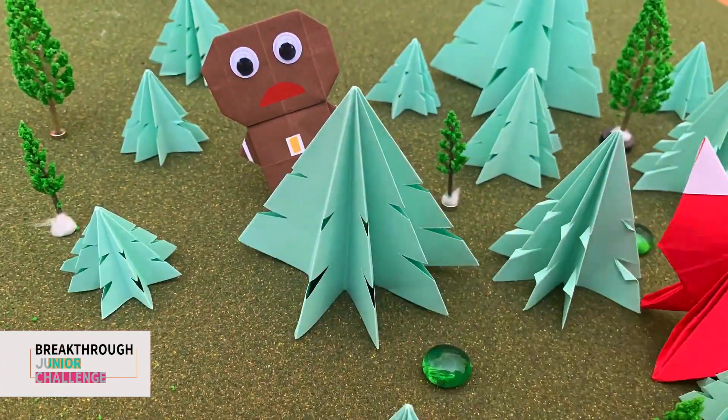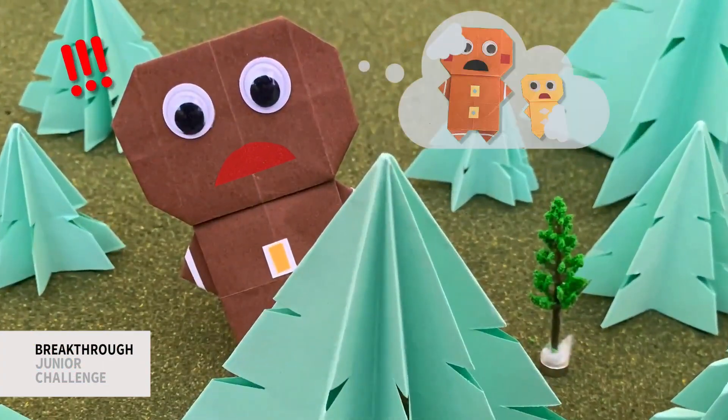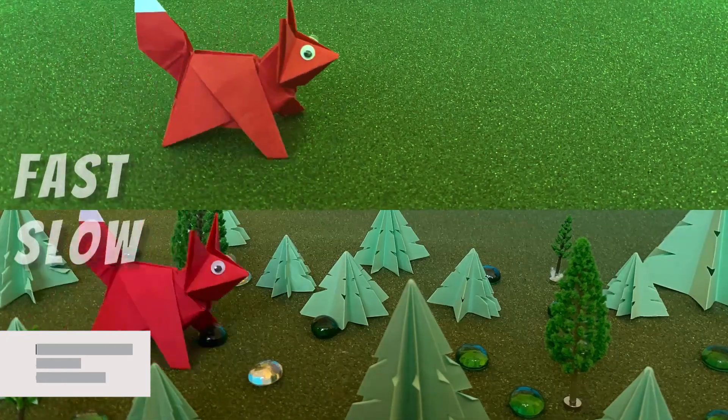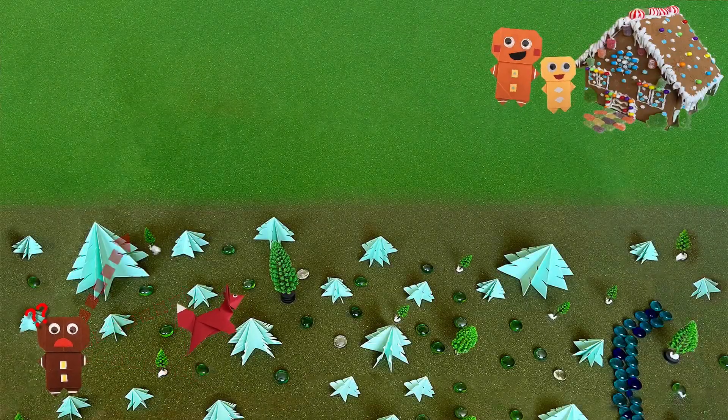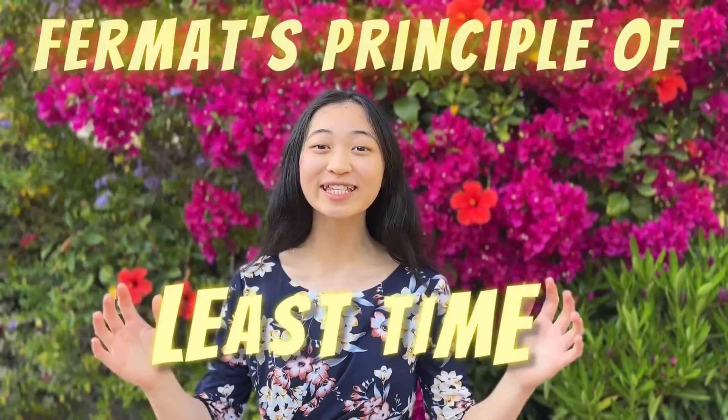The hungry fox races straight to the gingerbread man's home to eat his family. Both run faster in the plains than in the woods. How can the gingerbread man get home first and warn his loved ones? The answer lies in Fermat's principle of least time.